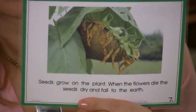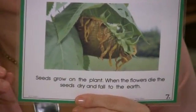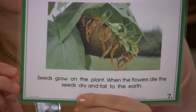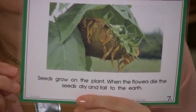Seeds grow on the plant. When the flowers die, the seeds dry and fall to the earth. And then you can explain to your child that the cycle starts all over again.